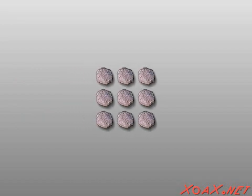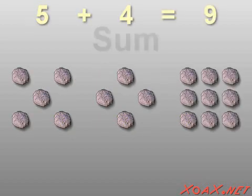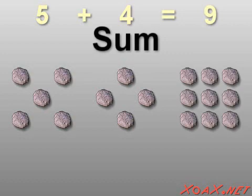Putting them all together, I have 1, 2, 3, 4, 5, 6, 7, 8, 9 rocks. So 5 plus 4 equals 9, or we say that 9 is the sum of 5 and 4.